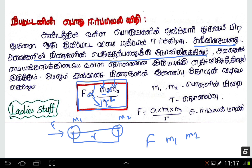Now, we will add some constant value. The constant is G. So the formula is F is equal to G into M1 into M2 divided by R squared.